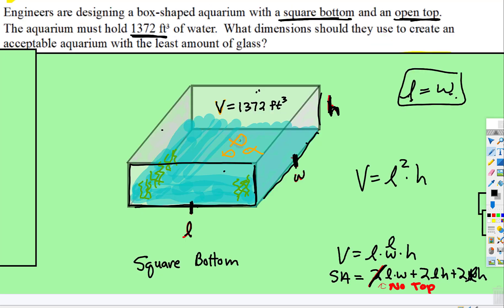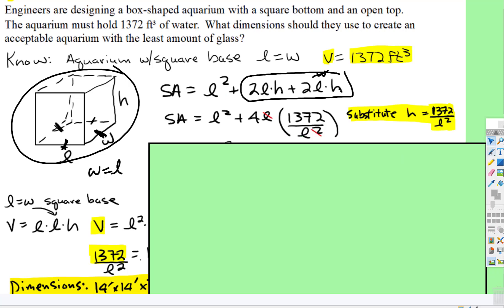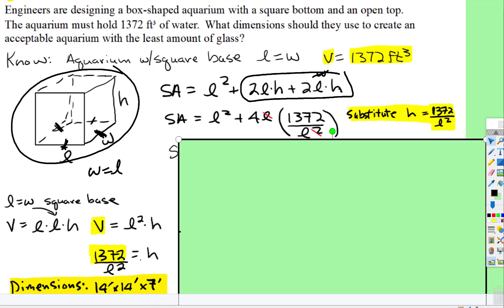But now we have to find a measurement for height. If we know that volume 1372 equals length squared times height, we can just divide both sides by length squared. So now, instead of height, we can put in 1372 divided by L squared, and that's what I did right there. H equals 1372 divided by length squared.